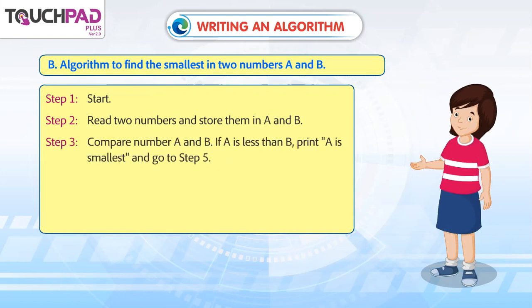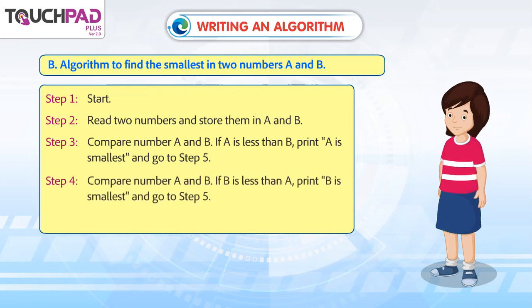Step 3: Compare number A and B. If A is less than B, print A is smallest and go to step 5. Step 4: Compare number A and B. If B is less than A, print B is smallest and go to step 5.